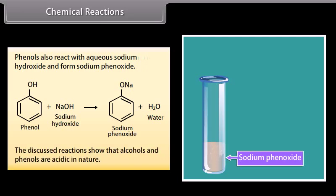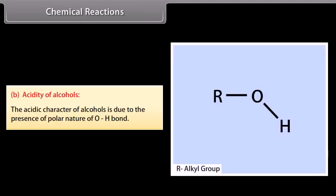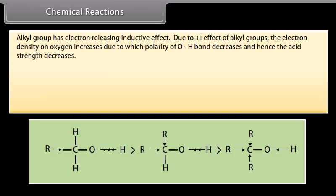The discussed reactions show that alcohols and phenols are acidic in nature. The acidic character of alcohols is due to the presence of polar nature of OH bond. Alkyl group has electron releasing inductive effect. Due to the plus I effect of alkyl groups, the electron density on oxygen increases, due to which polarity of OH bond decreases, and hence the acid strength decreases.